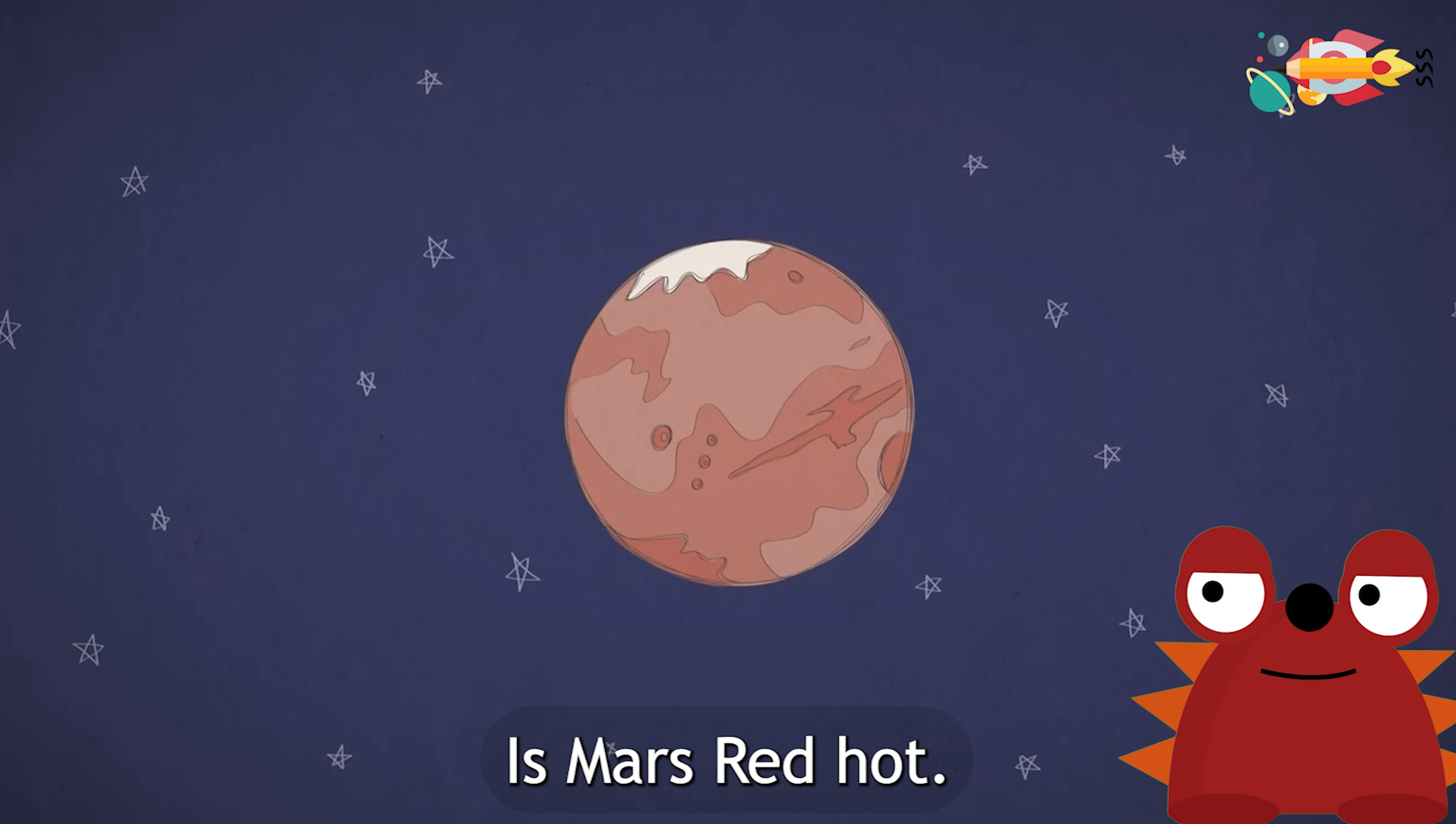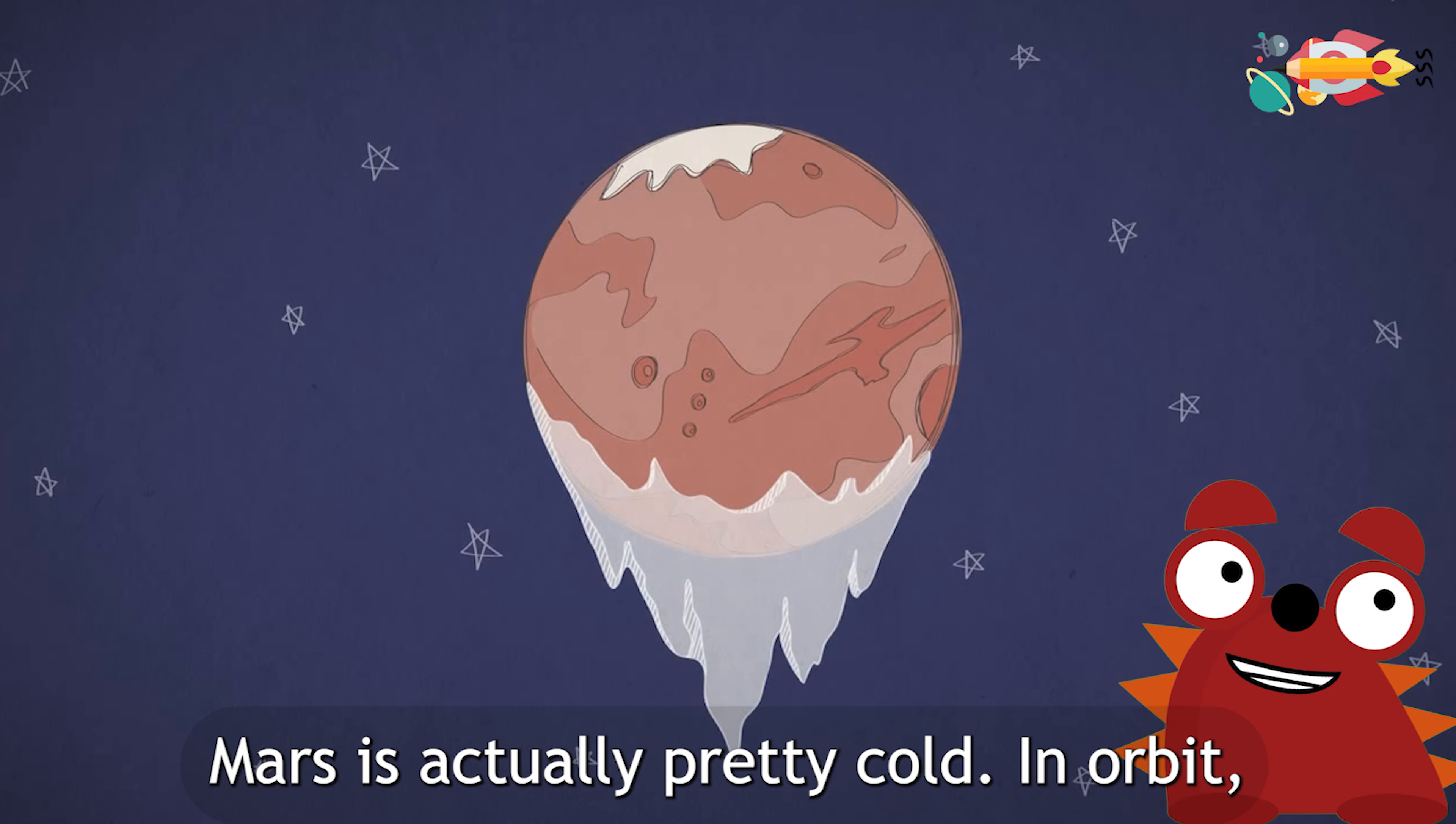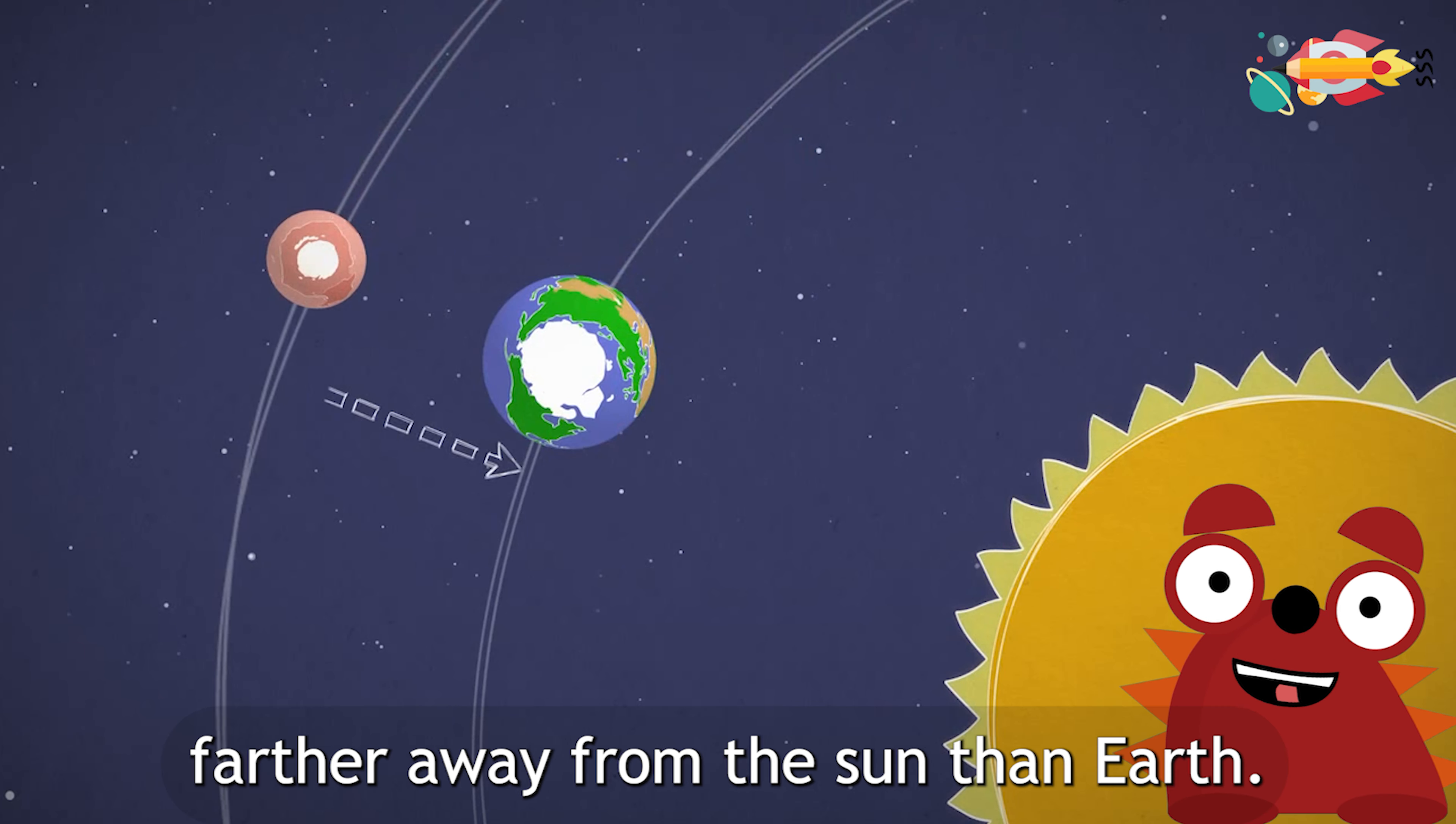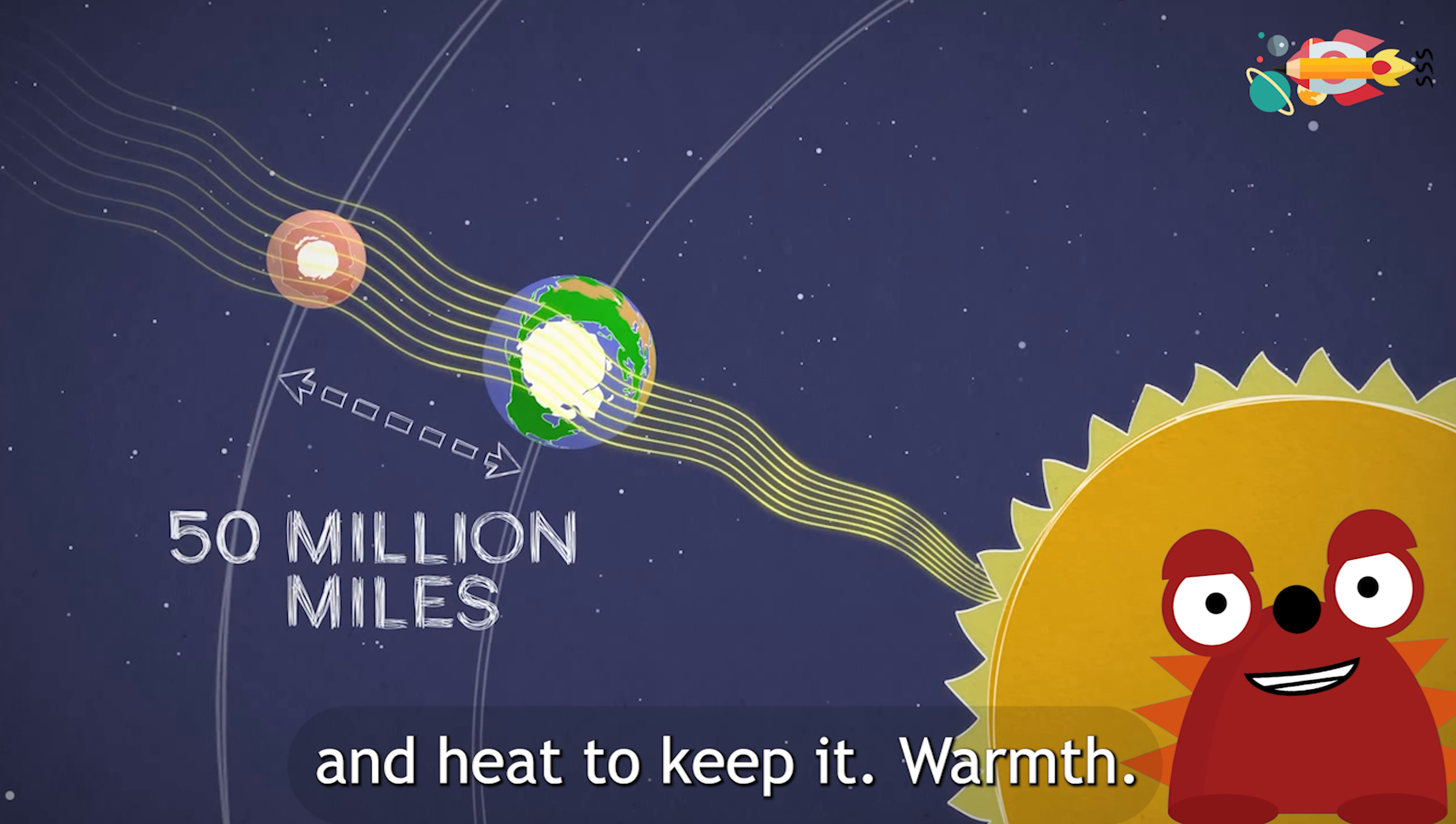Is Mars red hot? Mars may look hot, but don't let its color fool you. Mars is actually pretty cold. In orbit, Mars is about 50 million miles farther away from the Sun than Earth. That means it gets a lot less light and heat to keep it warm.